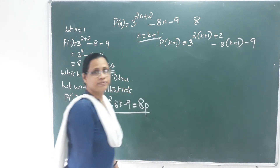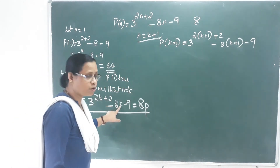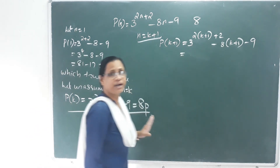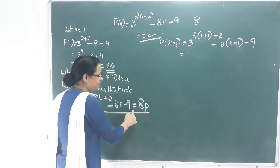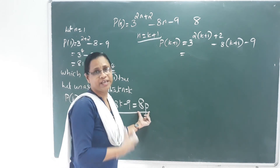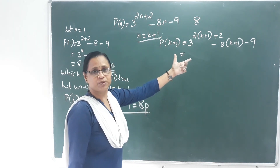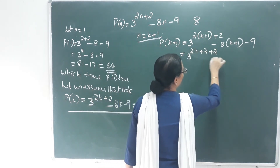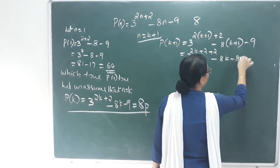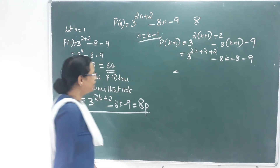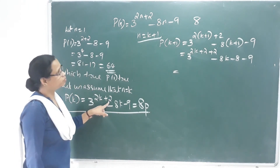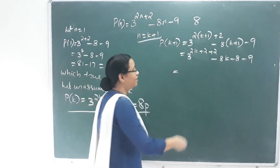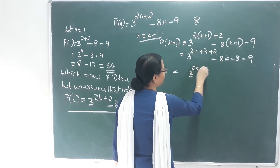This simplifies to 3 raised to 2k plus 2 plus 2, minus 8k minus 8 minus 9. We write 3 raised to 2k plus 2 into 3 squared, which equals 9. So we have 9 into 3 raised to 2k plus 2, minus 8k minus 17.